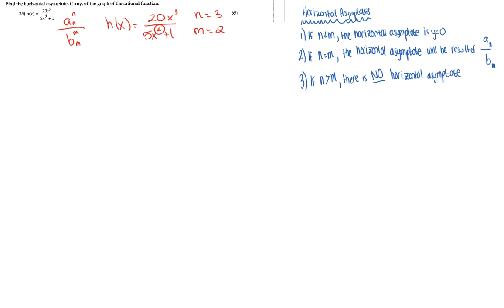We have already determined what our n exponent and our m exponent are. Now that we know our n and our m, let's look at our cases for horizontal asymptote and determine what case we will follow.